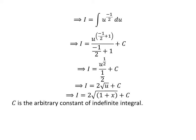We have solved the integral in terms of u. Now, we need to take back the expression in terms of x. For that, I have replaced u by 1 plus x which we had assumed earlier. So, i is equal to 2 times square root of 1 plus x plus capital C.